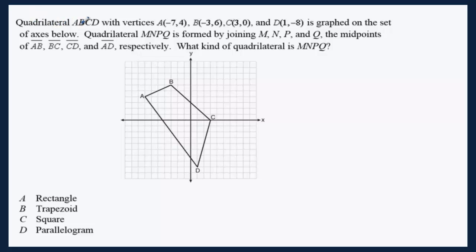Hi, quadrilateral ABCD with vertices A at this coordinate, B, C, and D here, is graphed on the set of axes below.